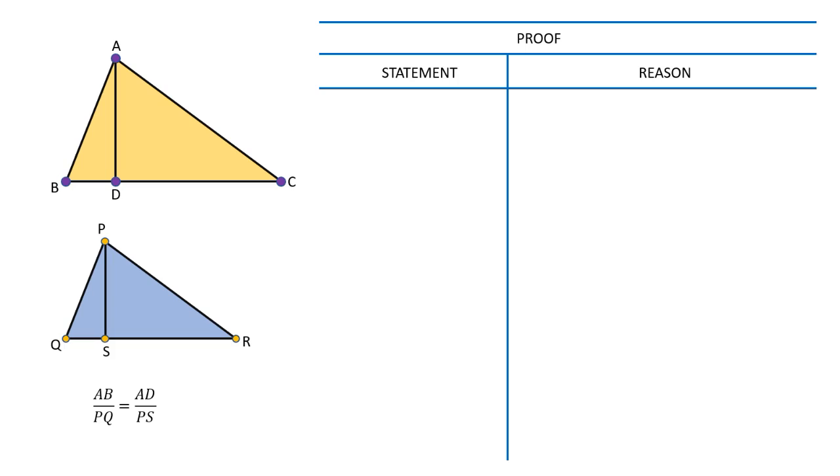Now we will adopt column-wise proof in which statements will be written in the first column and the reasons will be written in the second column. Triangle ABC is similar to triangle PQR because it is given. This implies the ratios of corresponding sides are equal.